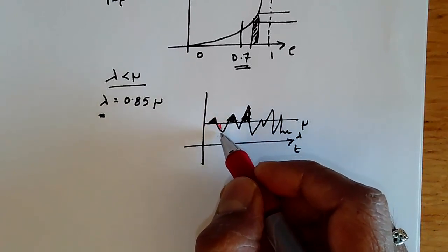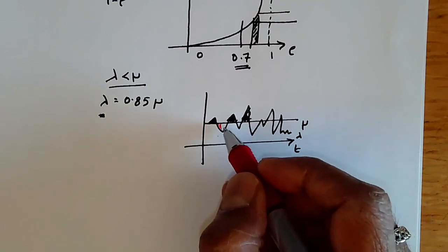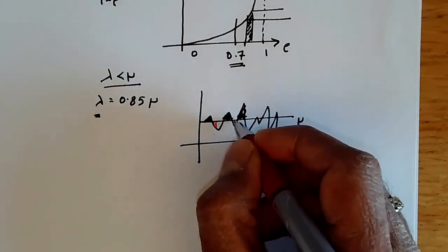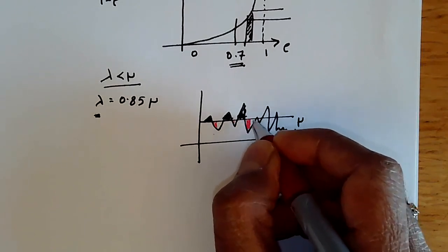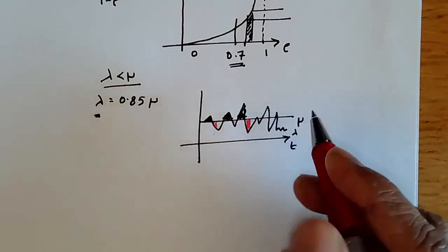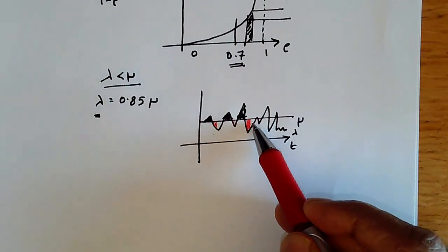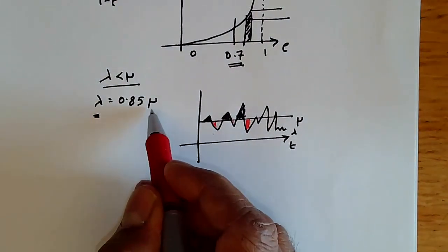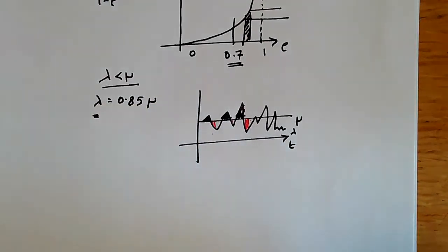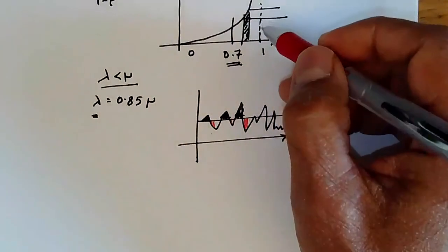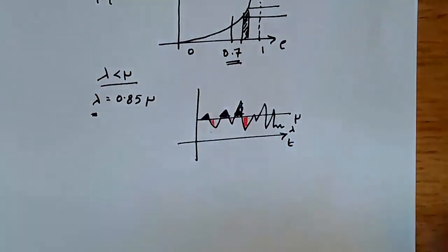During this shaded period, unshaded period over here, what's happening is that this portion over here we actually are wasting time. That's the reason why even though lambda is less than mu on average, in fact, the queue is shooting up, and when lambda is very close to mu, it gets to infinity.